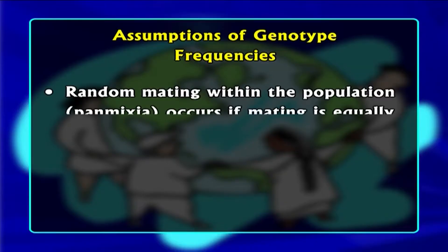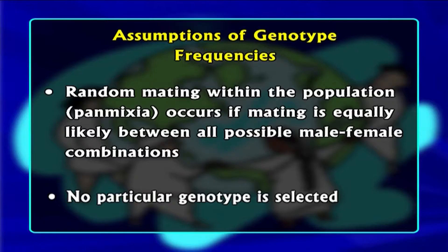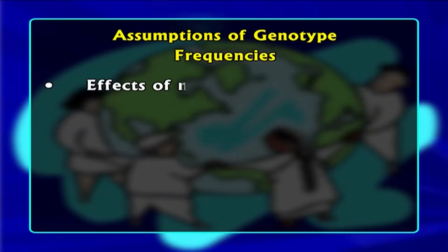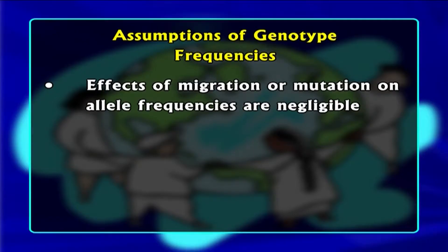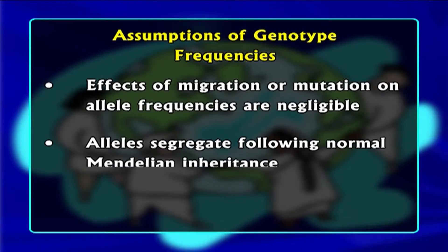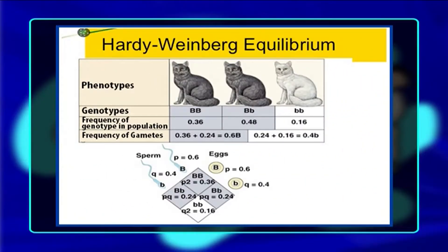there is random mating within the population, what you call as panmixia. This occurs if mating is equally likely between all possible male-female combinations. Number two, no particular genotype is being selected for. Number three, the effects of migration or mutation on allele frequencies are almost negligible. The alleles segregate following normal Mendelian inheritance. And another assumption is that the size of the population is effectively infinite. So if these conditions are met, then a population is expected to be in Hardy-Weinberg equilibrium.